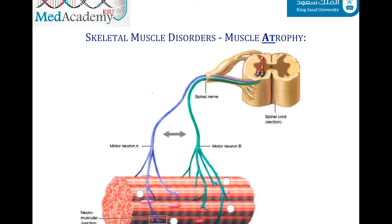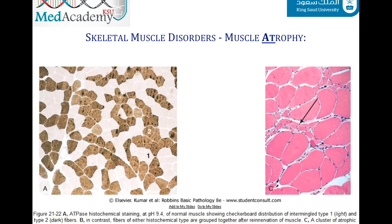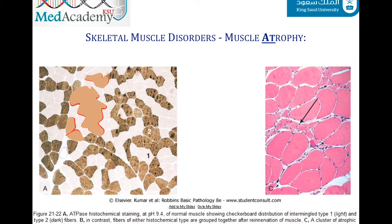Consider a diagram showing two motor units: one supplied by motor neuron A and another by motor neuron B, which supplies type 2 muscle fibers. If motor neuron B is injured by a chronic illness such as motor neuron disease, the denervated fibers send chemical signals to adjacent motor neurons requesting re-innervation. If those fibers are re-innervated by a type 1 motor neuron, they will convert to type 1 — a process called fiber type grouping, indicating recurrent neurogenic atrophy.